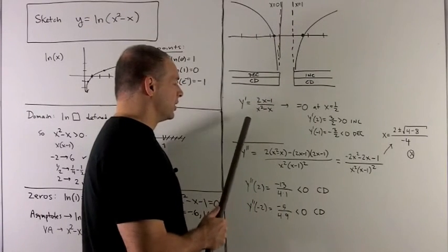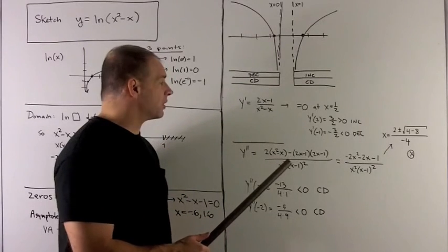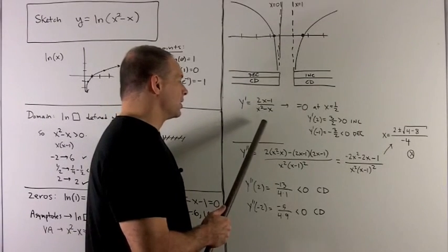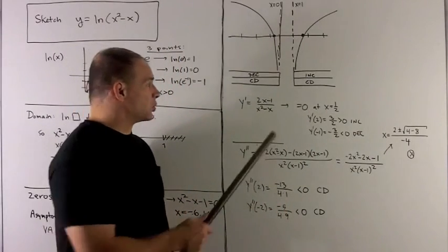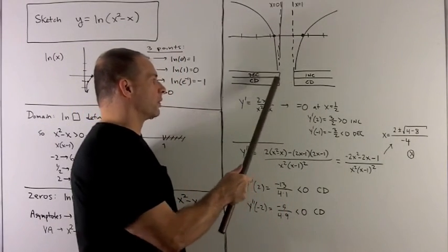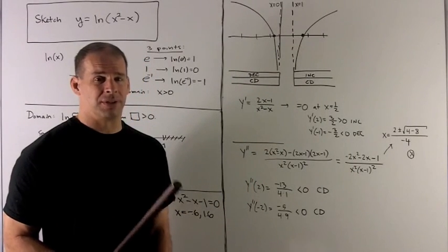So we want to know when this is equal to 0. The only way this can be equal to 0 is if the top is equal to 0. The only way the top is equal to 0 is if x equals 1 half. But this never happens because 1 half falls into this hole that we're throwing away. So there are no critical points for this function.